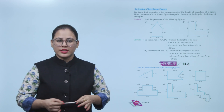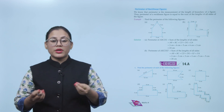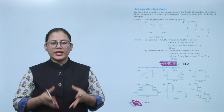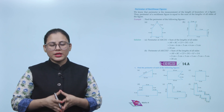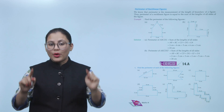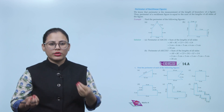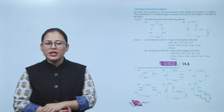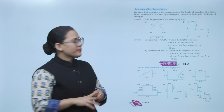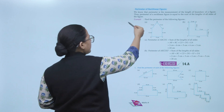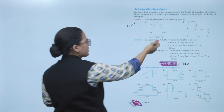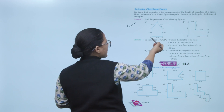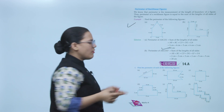Perimeter of rectilinear figures: the perimeter is the measurement of the length of the boundary of a figure. Thus, the perimeter of a rectilinear figure equals the sum of the lengths of all its sides. For example, adding sides of 5 cm, 6 cm, and others gives the total perimeter.